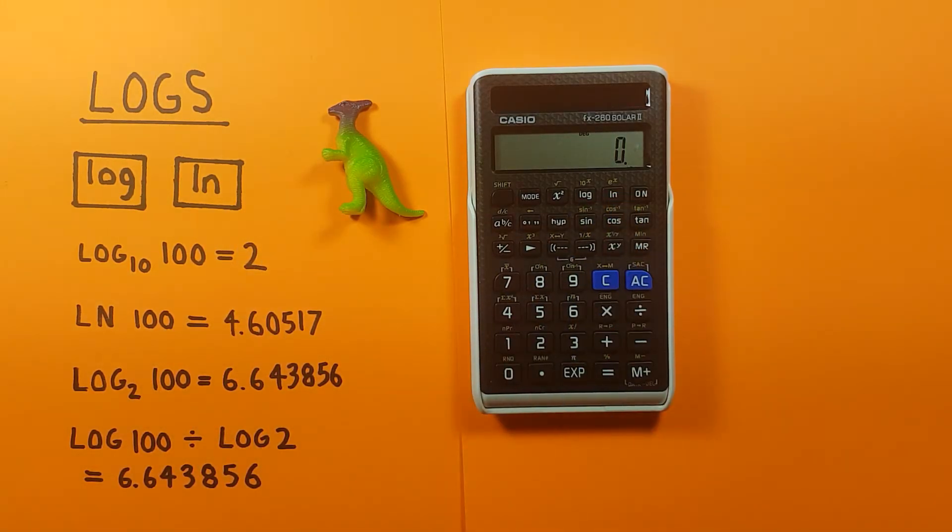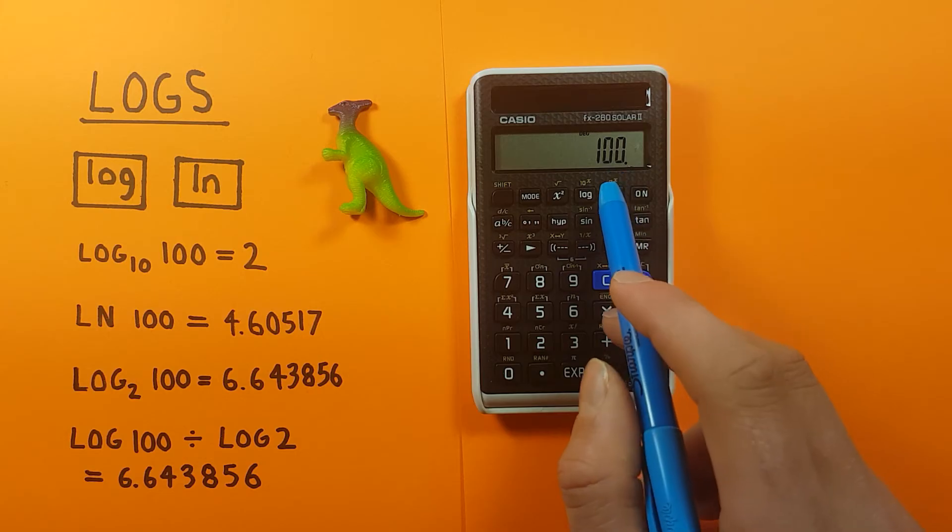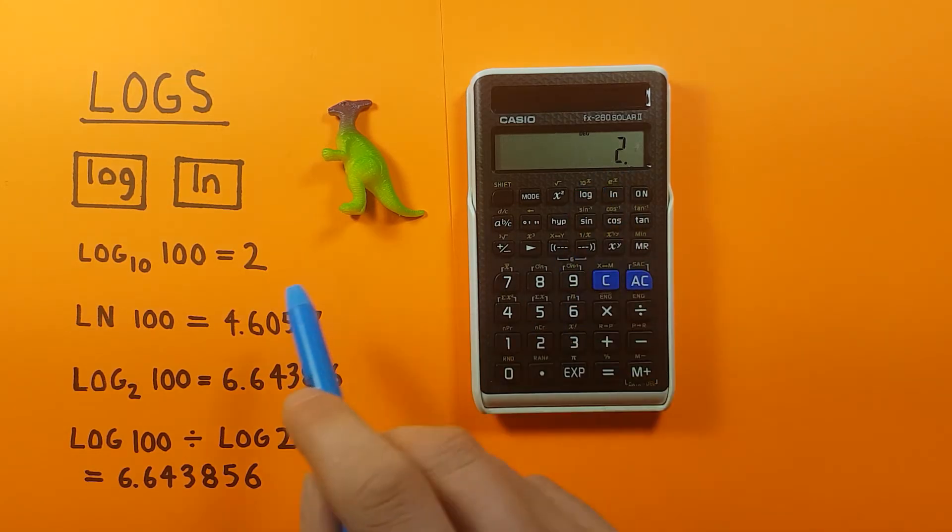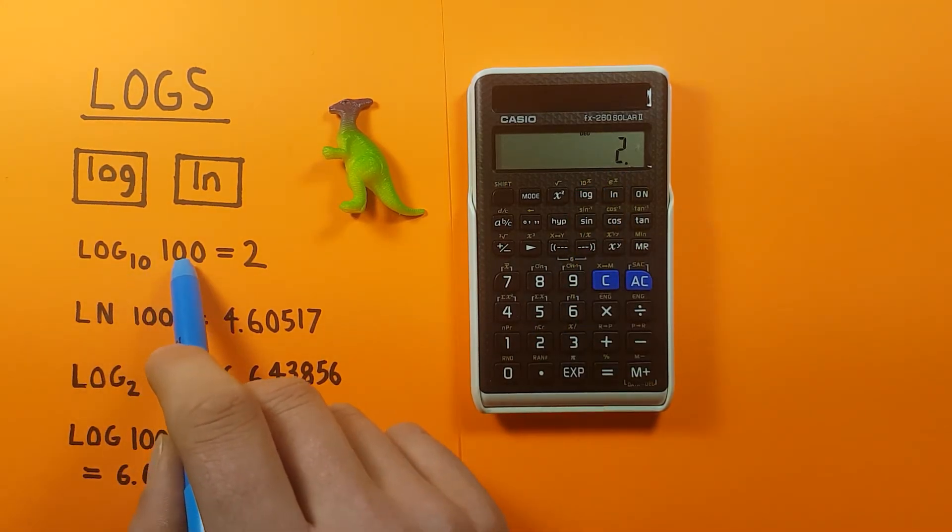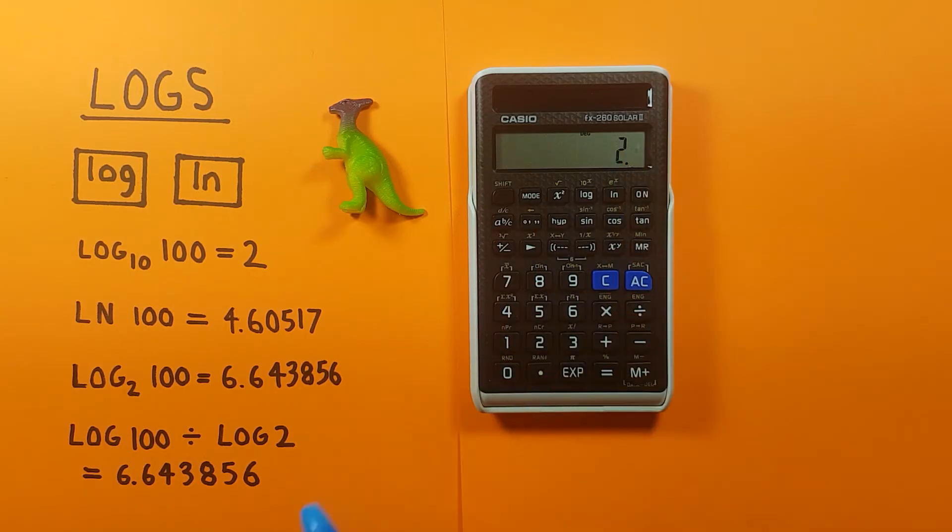Alright so this calculator has a standard log base of base 10, so this means if we find the log of a number, let's say 100, and press log, this is calculating log base 10 of 100. So that gives us 2.